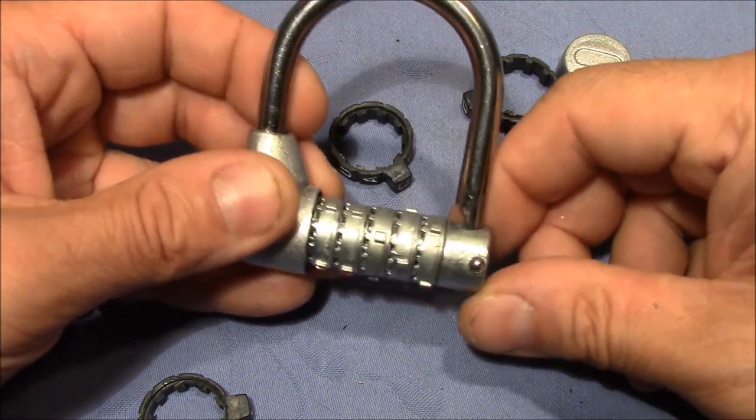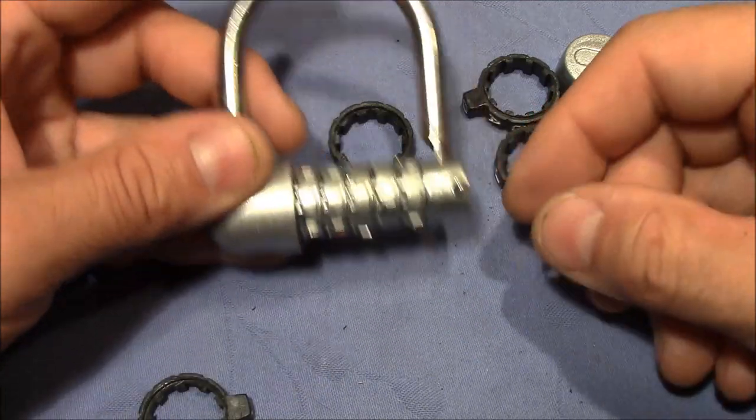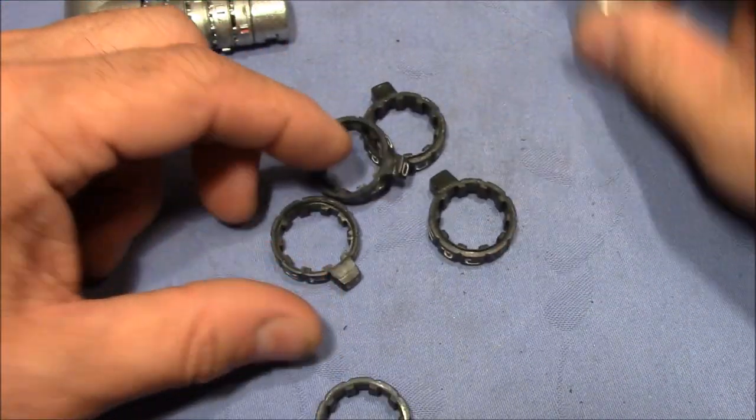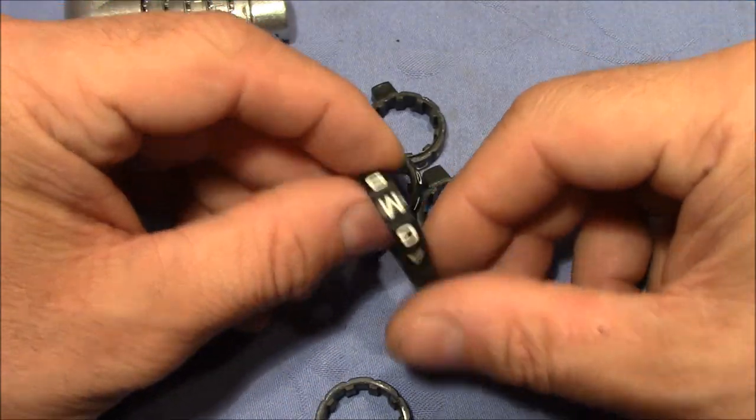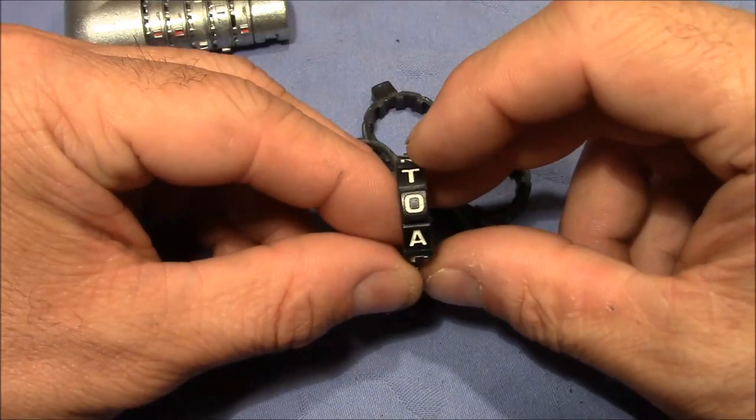So now comes the question why the same code is sometimes not the same code. And that's something we can understand when we look at the outer wheels. I messed it up, but we will look at the outer wheels one by one.